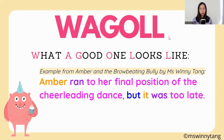An example of a compound declarative sentence: 'Amber ran to her final position of the cheerleading dance, but it was too late.' You can see I've used the coordinating conjunction 'but' in between the two clauses, and there is a comma before the coordinating conjunction 'but'.